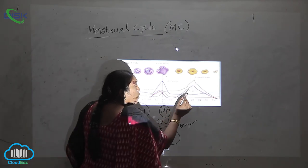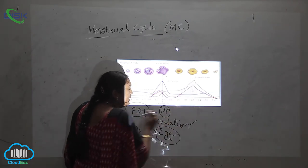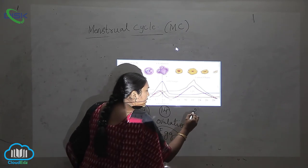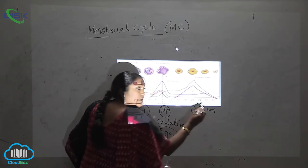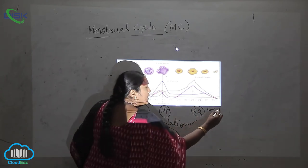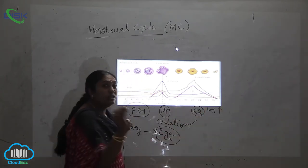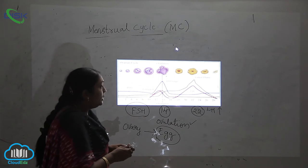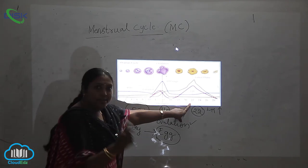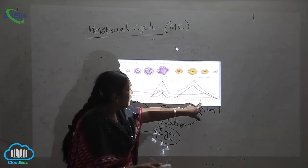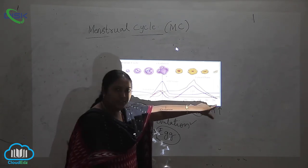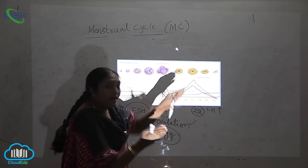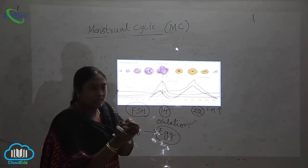Where we are showing on the 22nd day, this is again important. On the 22nd day the level of luteinizing hormone secretion is more. It is increasing on the 22nd day. Thus what is happening gradually on the 24th, 26th, and 28th days, you can see the follicle is reducing.